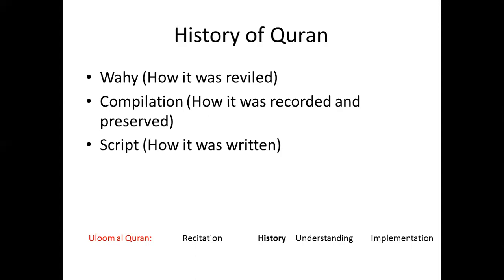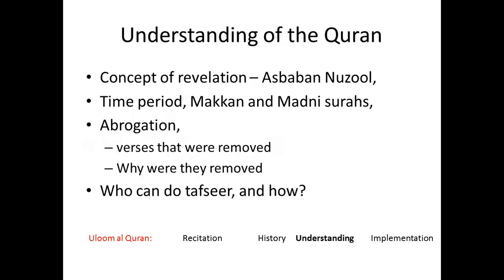How is the Qur'an recited? Another aspect in Uloom Al-Qur'an is the history of the Qur'an: how was it revealed? What is wahi? How was it compiled, recorded, or preserved? What is the script? What are the different ways in which the Qur'an was written down? You will be studying the different types of scripts and how the Qur'an initially was written without any dots, without any harakas, and why the harakat came into being in the first place. Insha'Allah ta'ala we'll be studying all of that in this subject.